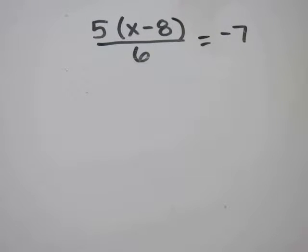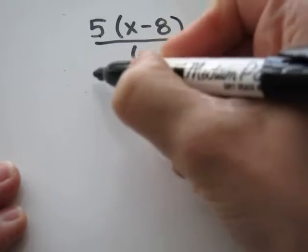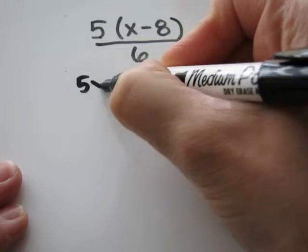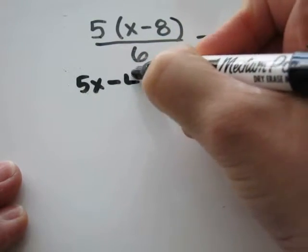Problem 22, 5 times x minus 8 over 6 equals negative 7. First, I'm going to get rid of the parentheses. 5 times x is 5x. 5 times 8 is 40.